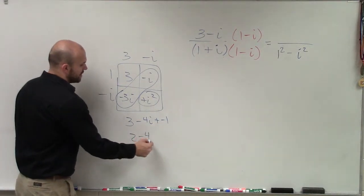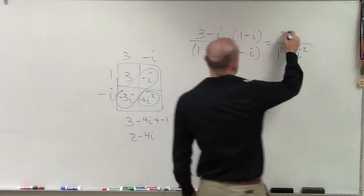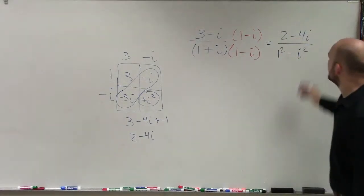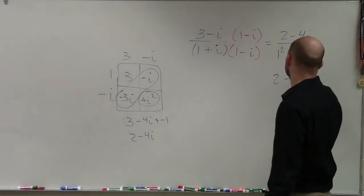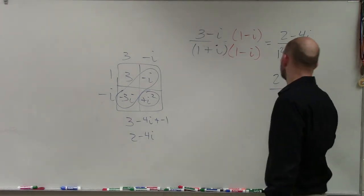So therefore, it's going to be two minus four i. So I write that up top. And then I know that i squared becomes a negative one. One minus a negative one is two minus four i divided by two.